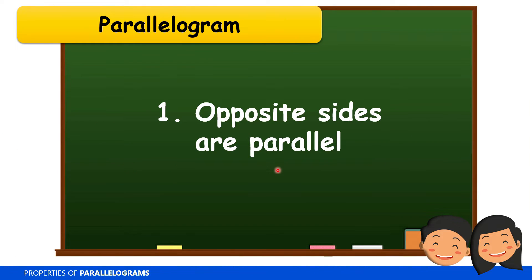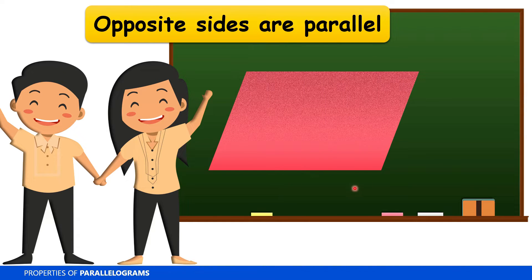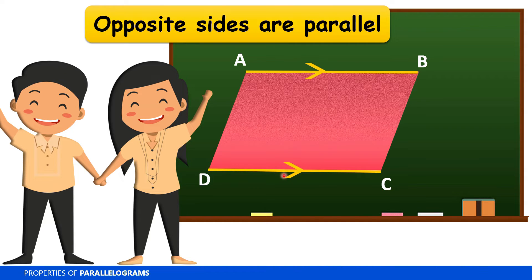Let's discuss this property of parallelogram. This property states that the opposite sides of a parallelogram are parallel. Let's have an illustration. Here we have parallelogram ABCD. In this parallelogram, side AB is parallel to side DC. That is why we have these parallel marks.